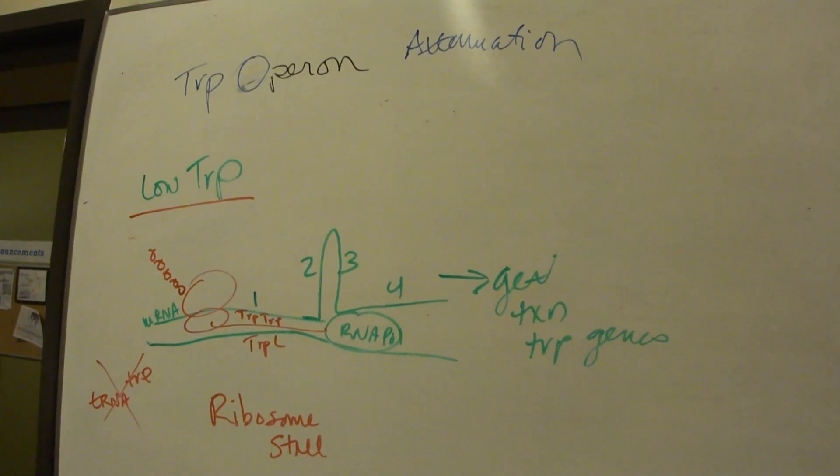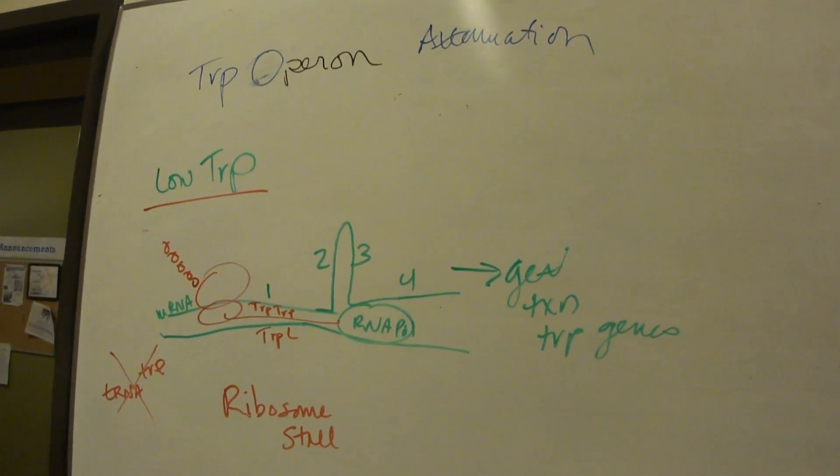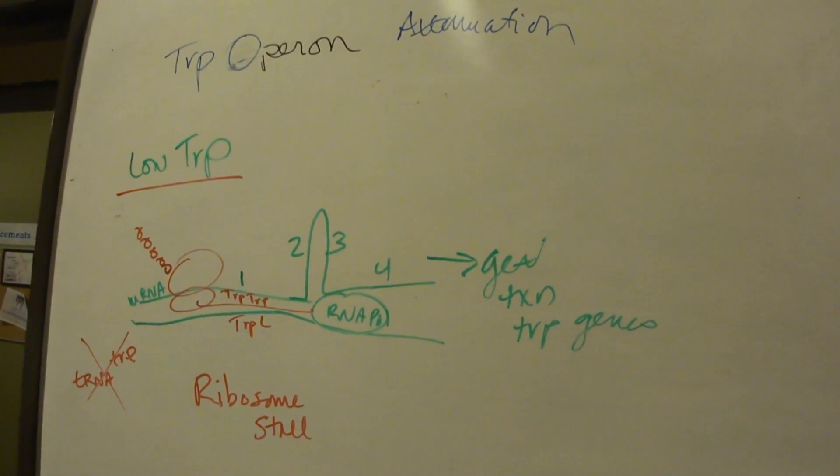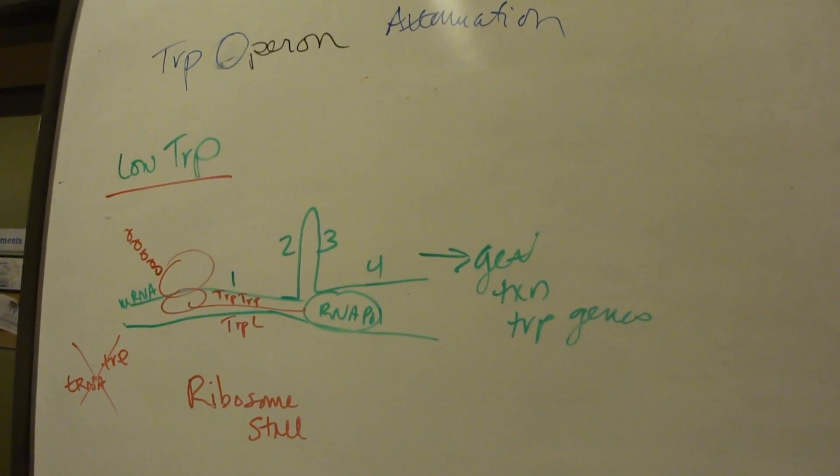That 2-3 stem loop does not contain the termination sequence, so we get transcription of the trp genes because there's no termination. When you get the 3-4 stem loop, that forms a U-rich region that leads to rho-independent termination. Let's look at that scenario.